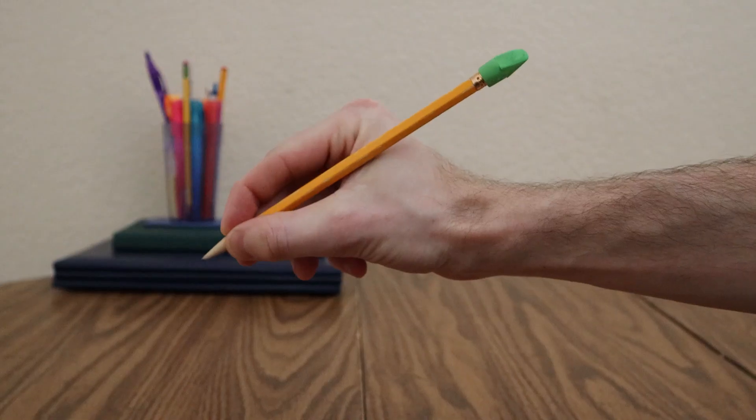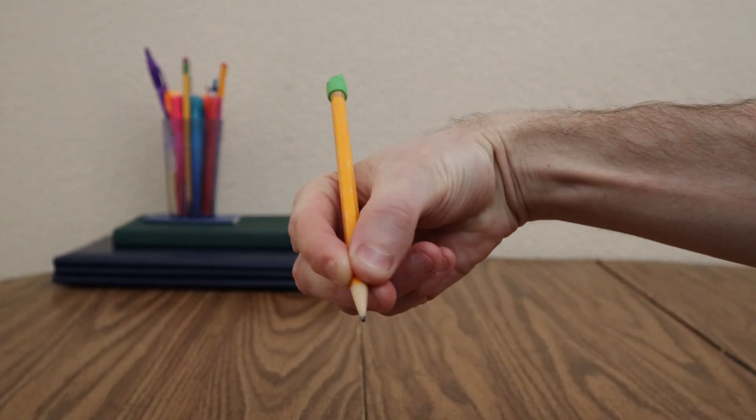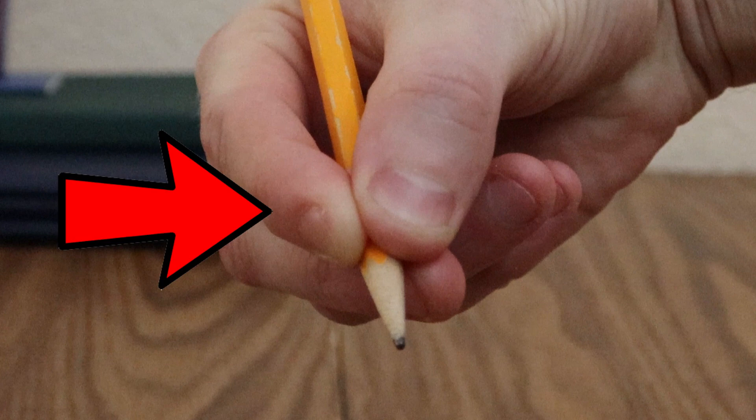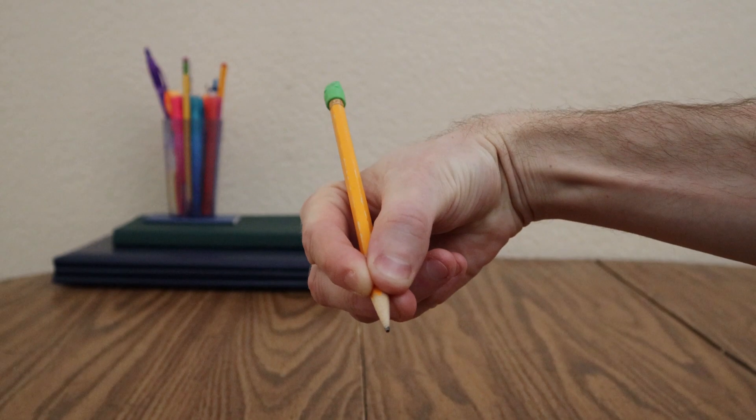Okay, we need to make sure this is a good pencil pinch. Let's take a good look. Let's look at the pointer finger. It's pointing at the point of the pencil. We like that. Thank you, pointer finger, for pointing to the point.